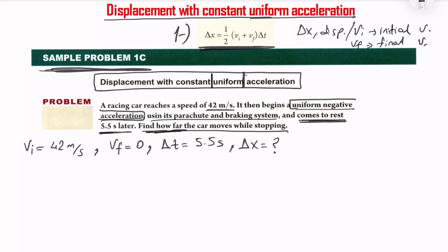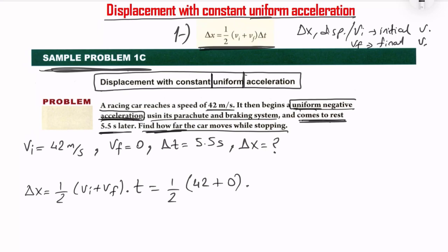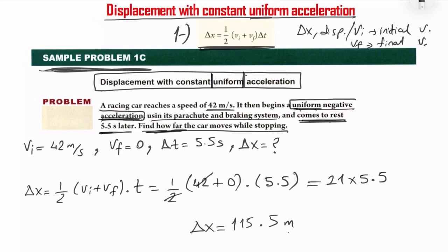Substituting: Δx = ½ × (42 + 0) × 5.5. The 2 and 42 cancel to give 21 × 5.5 = 115.5 meters. So the answer is 115.5 meters. This completes Practice 1C, which uses the first uniform acceleration formula.